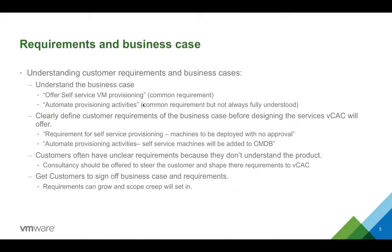Clearly defining requirements of a business case before designing the services is very key. You need to make sure the services you're going to design for VCAC can deliver. With X-as-a-service, we can offer nearly anything with an API. But if it's a manual process they want to automate, they need to document and present that manual process to you so you can analyse whether it is something you can orchestrate with VCAC.